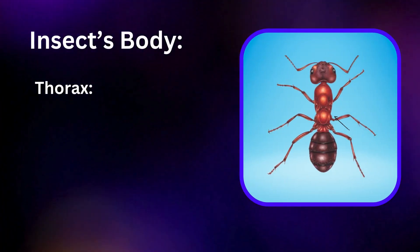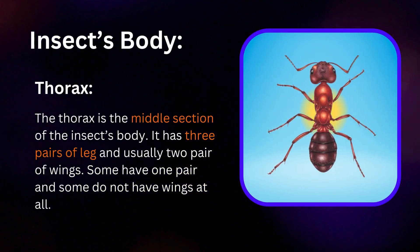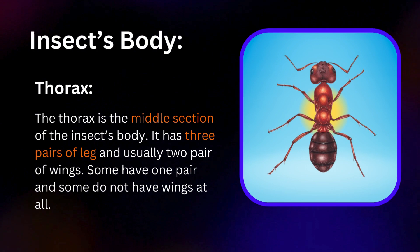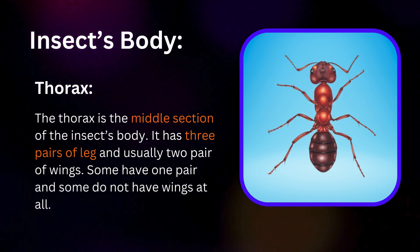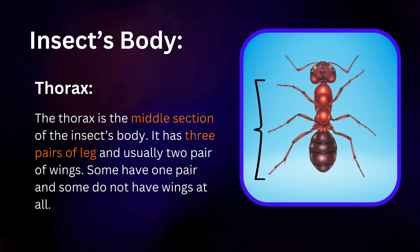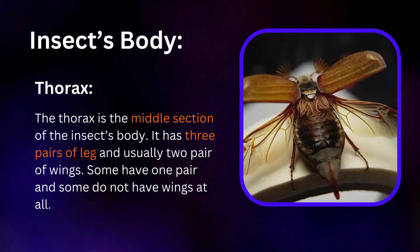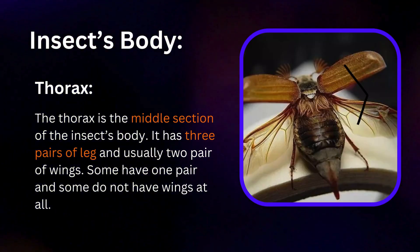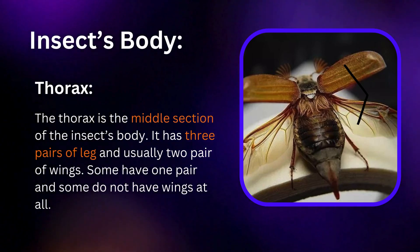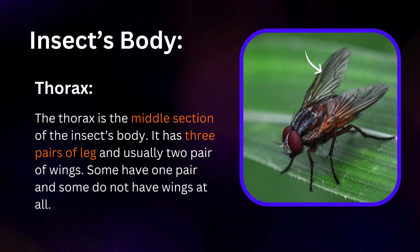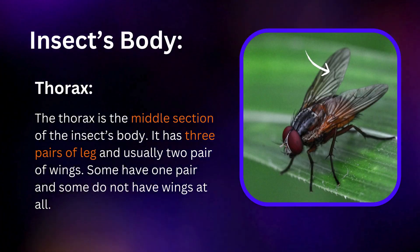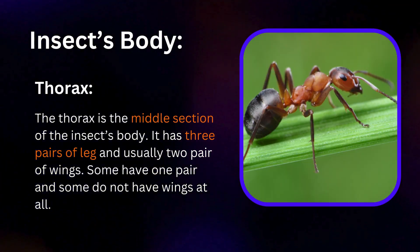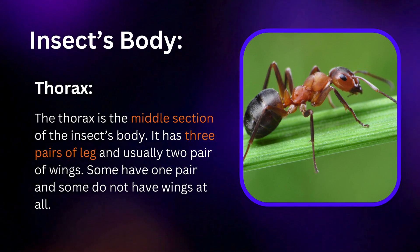Thorax. The thorax is the middle section of the insect's body. It has three pairs of legs and usually two pairs of wings. Some have one pair and some do not have wings at all.